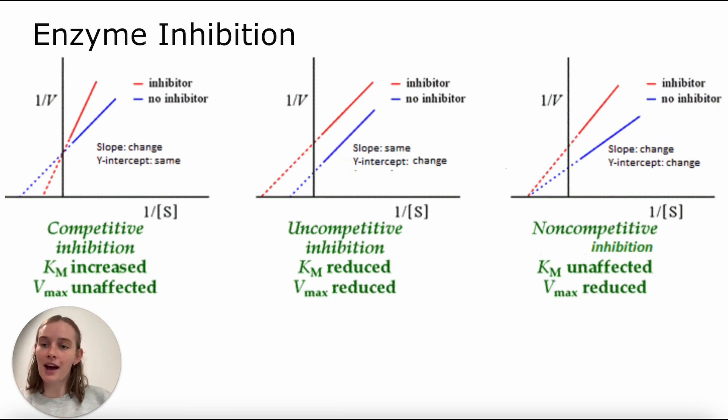On our far left, we have a graph depicting competitive inhibition, and we can see on this graph the no-competitor environment is in blue, while the red indicates that inhibitor has been added. We see here that the slope has changed, which is bringing that x-intercept in towards our point of origin. This means that when we have competitive inhibition, we will see an increase in Km. However, Vmax will be unaffected because our y-intercept has not changed. In competitive inhibition, you see that the enzyme is binding directly to the active site and is competing with the substrate for the enzyme. That is why we call it competitive inhibition.